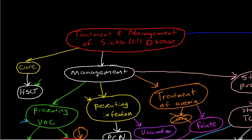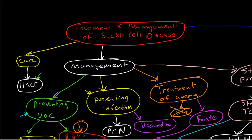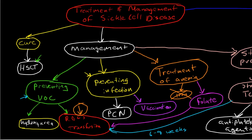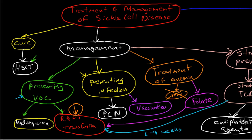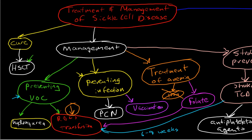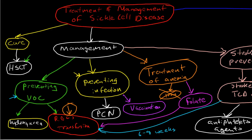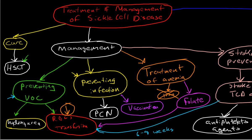To review: the treatment and management of sickle cell disease — there's really one option for cure, and that's hematopoietic stem cell transplant. It's limited to people with a matched sibling donor who does not have sickle cell disease, and it has a high rate of complications and significant mortality. So it's something to consider if a donor is available. For those for whom cure is not an option, management is needed. Preventing veno-occlusive disease is one aspect; the mainstay is hydroxyurea, and for some patients chronic transfusions may be helpful.